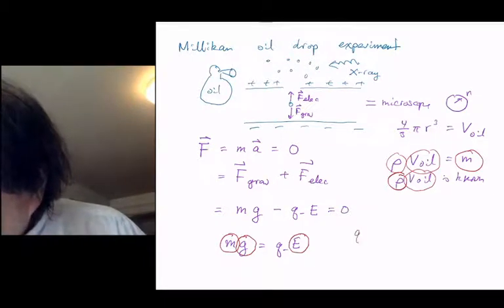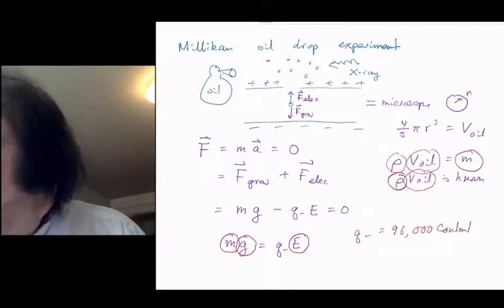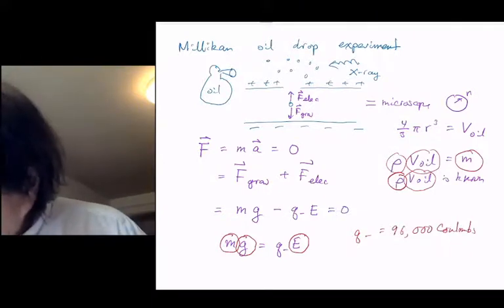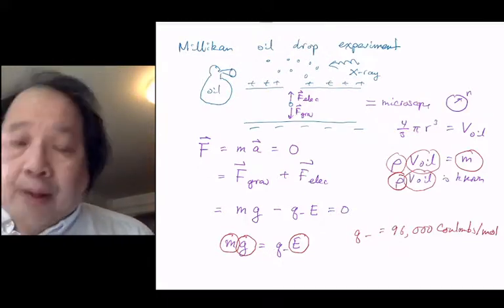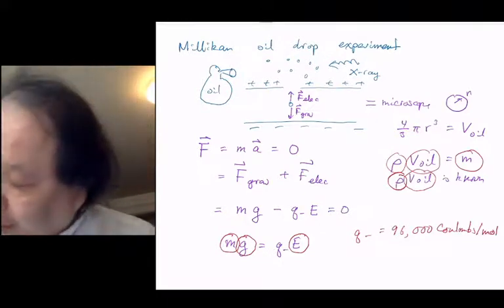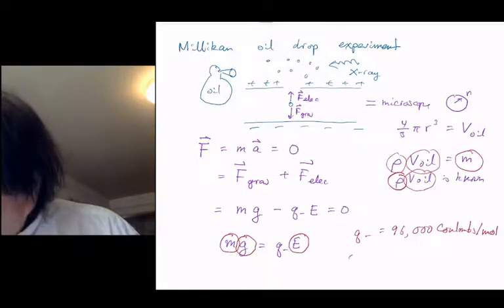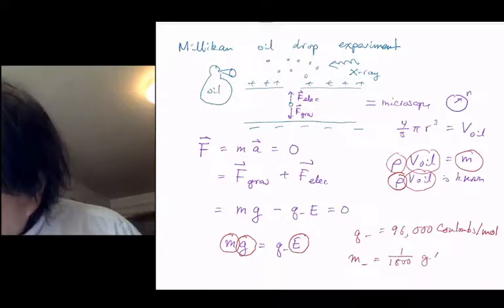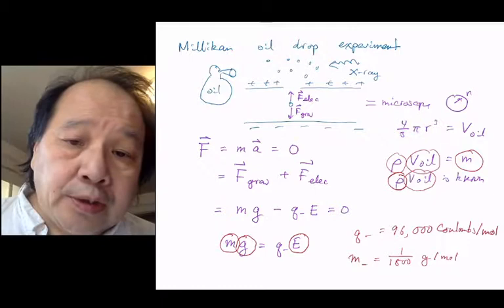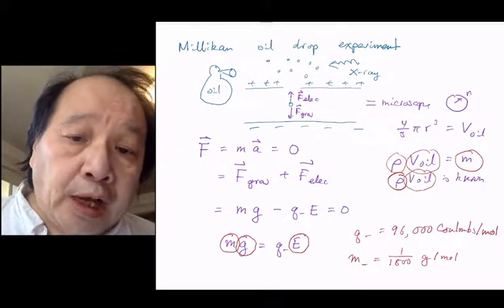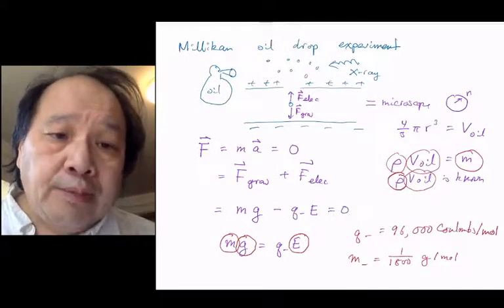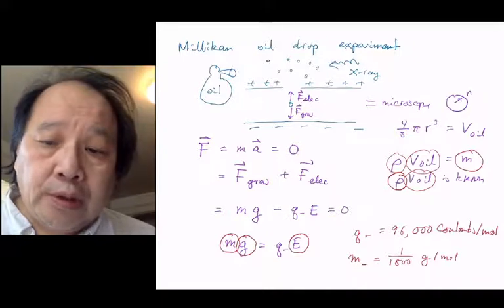The charge of the electron is 96,000 Coulombs per mole. Remember that we count little particles not by the dozen but by the mole: 96,000 Coulombs per mole. Remember that the Thompson experiment got us q over m. He discovered the mass of the electron was one over 1,800 grams per mole. The electron turns out to be very light, because moles of atoms typically weigh grams, but also extraordinarily massively charged - 96,000 Coulombs per mole is huge.